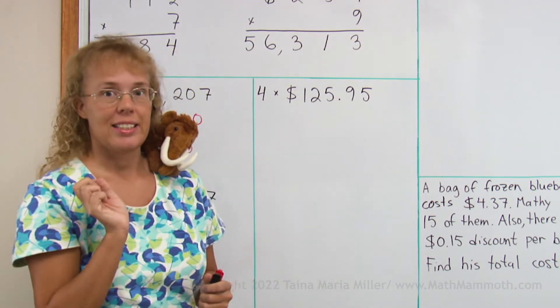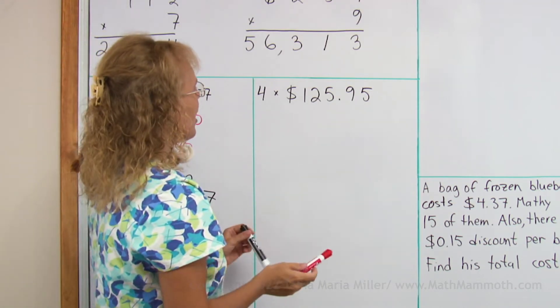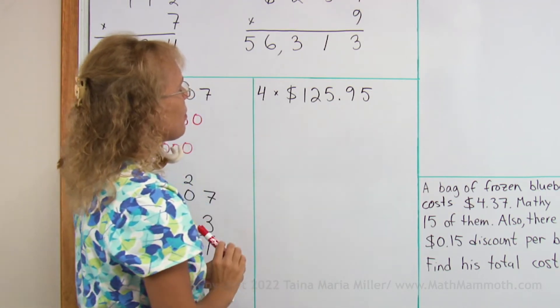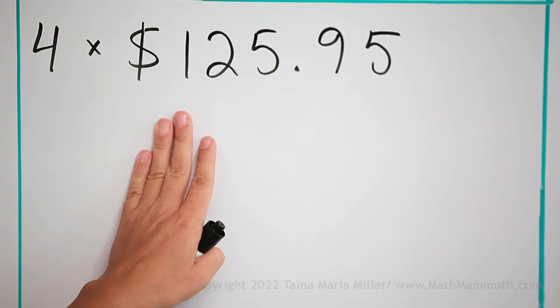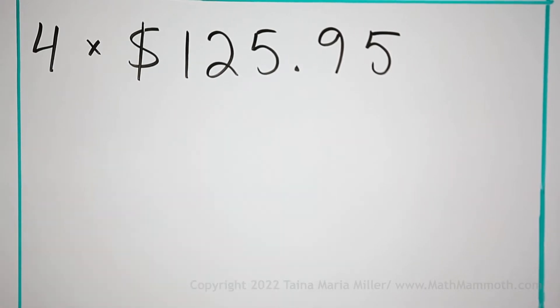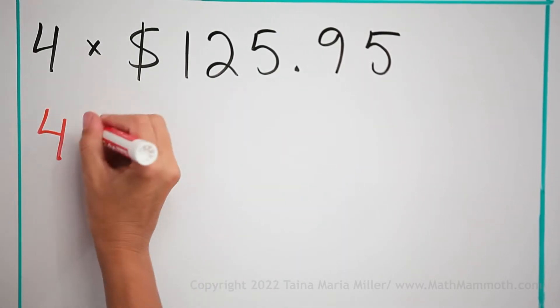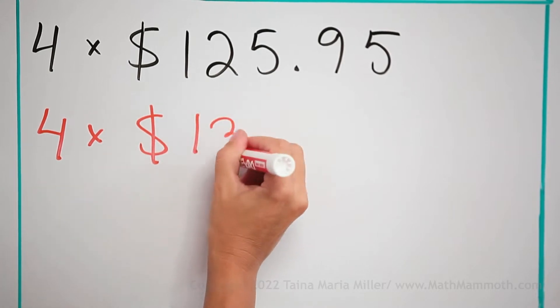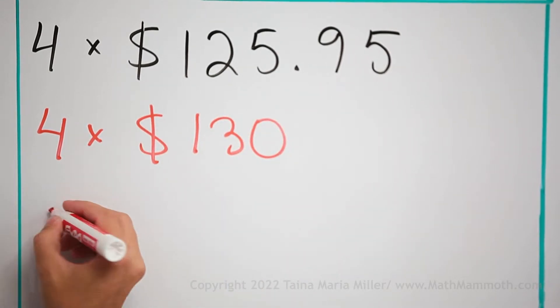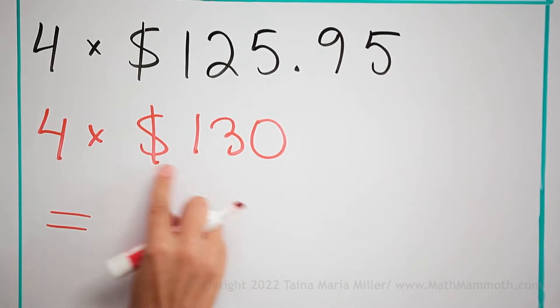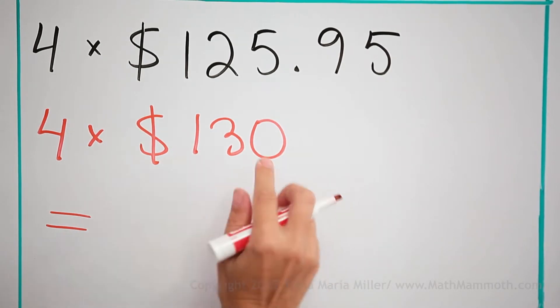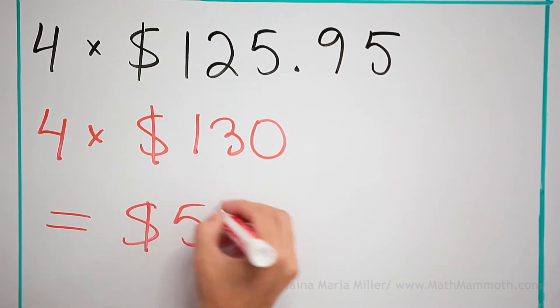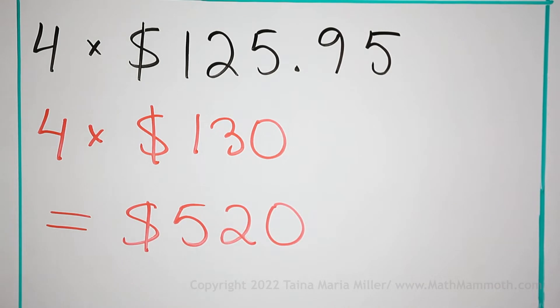But first, let's estimate. Okay, round this number to somewhere. We could round it to maybe, maybe to the nearest $10, how about that? I would get four times $130, and so that would be $400 and $120, $520, okay?